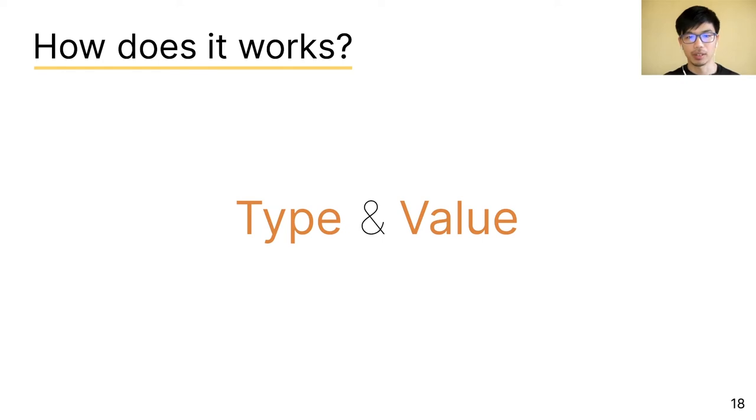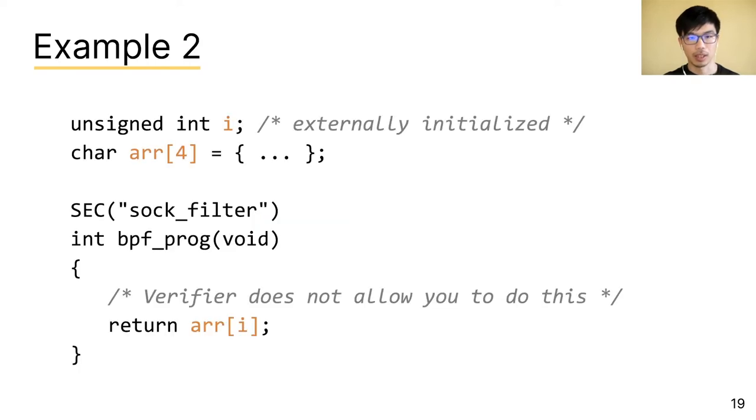So far, we've only covered how type checks work. But what about values? Well, to see how value checking works, let's look at another example.